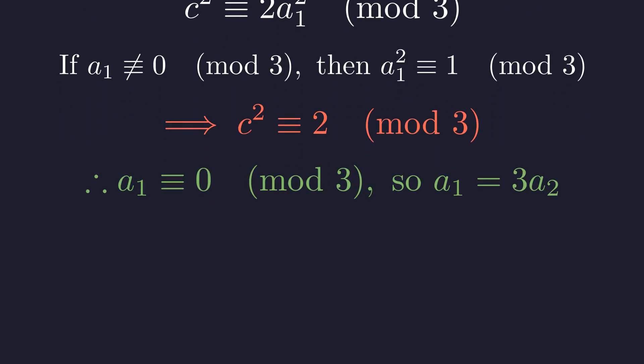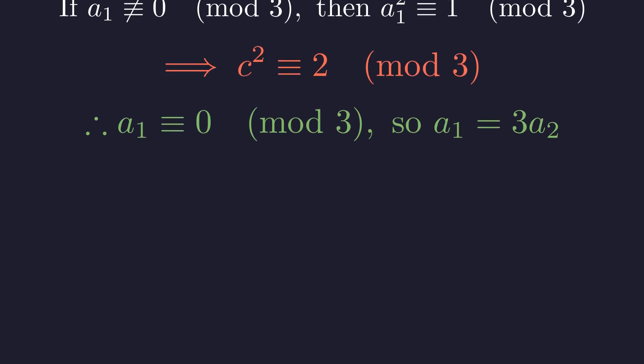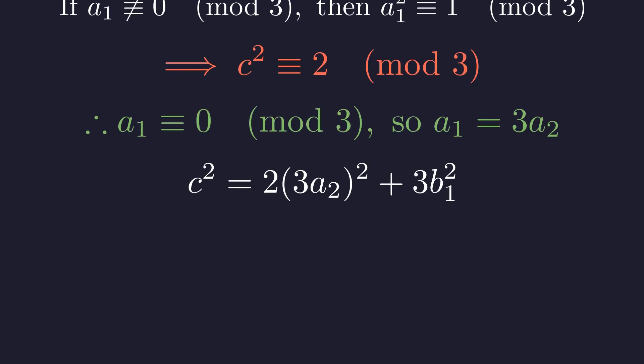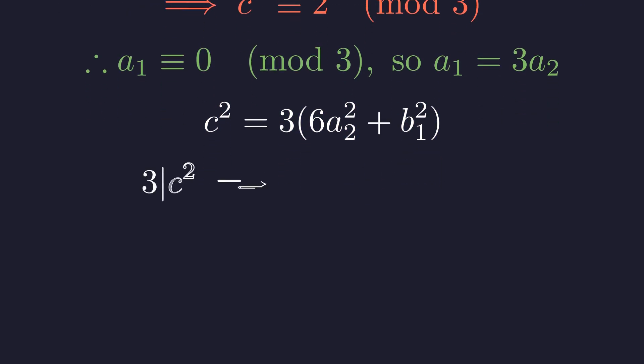Let's write a₁ as three times a₂. Substituting a₁ equals three times a₂ into our equation. Now let's square the term three times a₂. Three squared is nine, so we get nine times a₂ squared. Two times nine is eighteen. Both terms on the right are divisible by three. Let's factor out the common factor. Factoring out three shows that c squared is divisible by three.